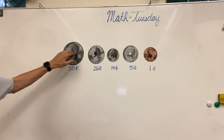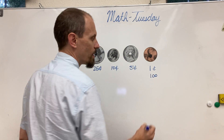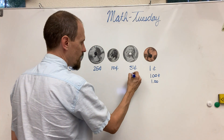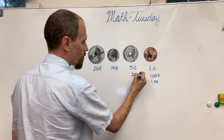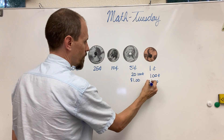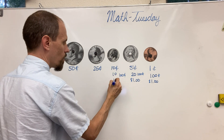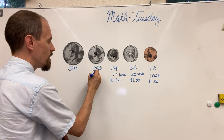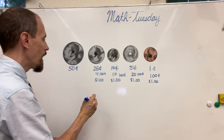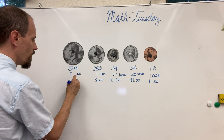So: 50 cents, 25 cents, 10 cents, 5 cents, 1 cent. Remember, we needed 100 of these to make 100 cents or $1. We needed 20 of these to make 100 cents or $1. We need 10 of these to make 100 cents or $1. We need 4 of these to make 100 cents or $1, and we need two of these to make 100 cents or $1.